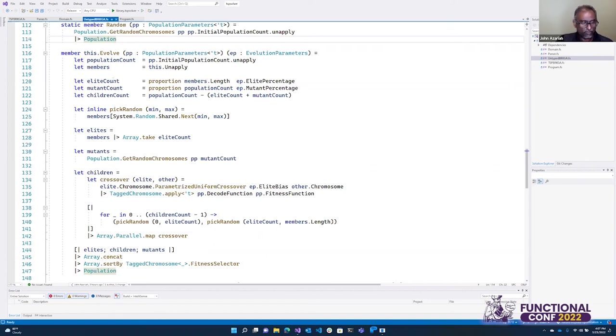Now, we take advantage of the fact that once the solution is built, it is completely immutable. So the problem represents, is represented in terms of immutable components. So parallelization literally falls out of the mix. So we just go from map crossover to array parallel map crossover, which basically allows us to do the building of the next generation in parallel.